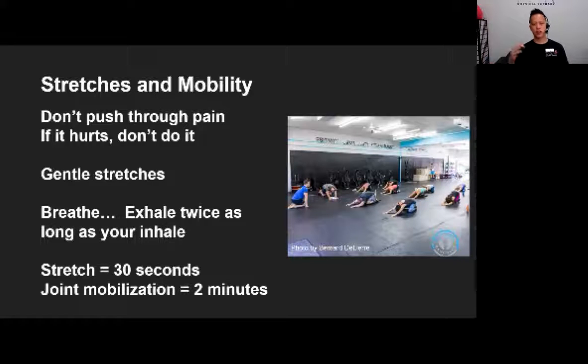Moving into the stretches and mobility. If we're going to do something tonight, make sure it doesn't hurt. To create permanent change in tissues, we want to hold stretches for at least 30 seconds, some static stretches for 30 seconds, and then the joint mobilizations, try and do them for at least two minutes. Any stretch that's held for less than 30 seconds, what happens is that you lengthen that tissue, and then it just snaps back into a short position again.